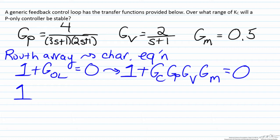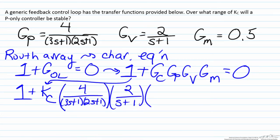We will now substitute in these values. It is a P-only controller, so GC will be KC. The process transfer function is what we see above, the valve transfer function is 2/(s+1), and the sensor transmitter is 0.5, so we set that equal to zero.